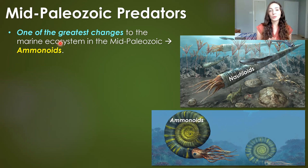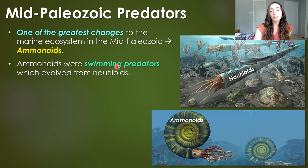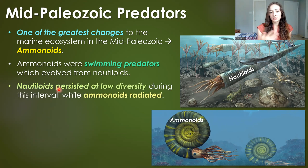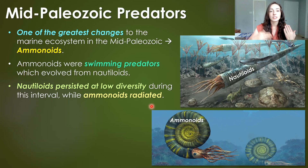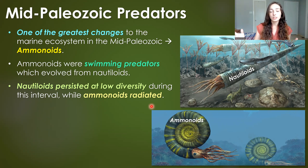One of the greatest changes in marine ecosystems at this time was the evolution of ammonoids — swimming predators that evolved from the nautiloids. Nautiloids persisted at low diversity, whereas the ammonoids radiated rapidly and kind of took over. That's one reason ammonoids are such good index fossils from this time until the end of the Mesozoic — they were so widespread and successful, and their species only lived for short periods of time, making them very distinctive for certain intervals of Earth's history.